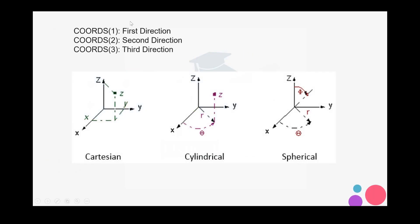COORDS 1, 2, 3 represent directions. For example, in the Cartesian system the first one is x, second is y, third is z. In cylindrical coordinates, the first one is r, second is theta and third is z. In spherical coordinates, the first one is r, second is theta and the third one is phi.